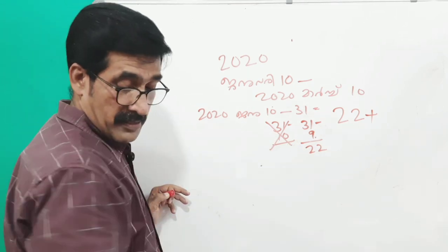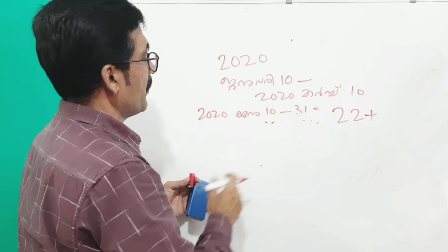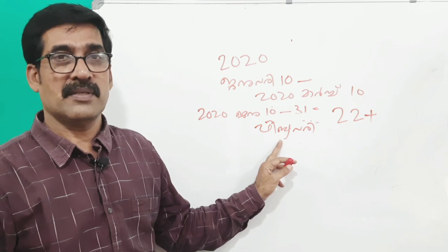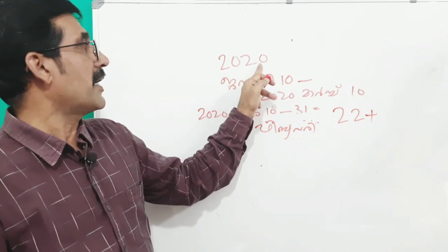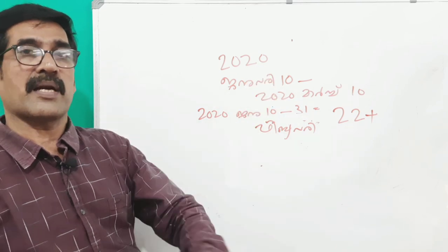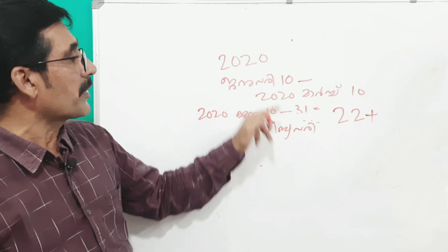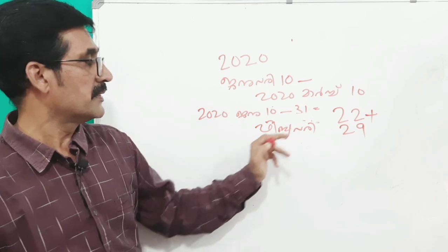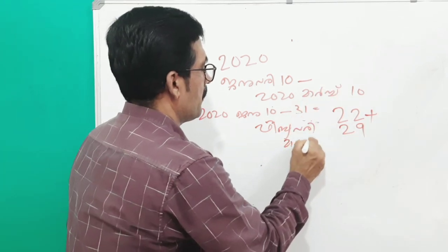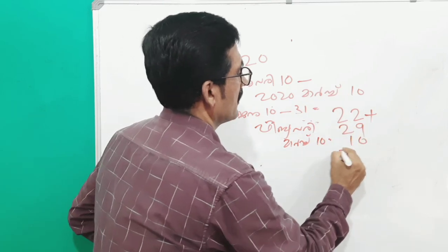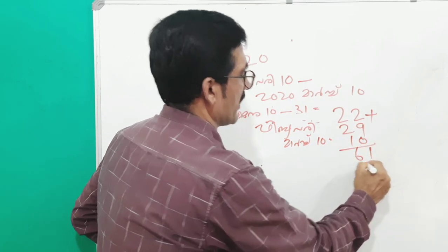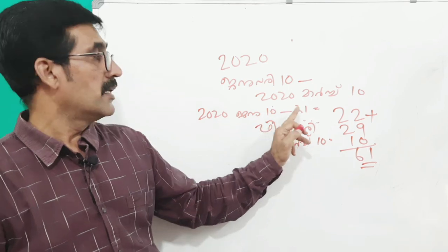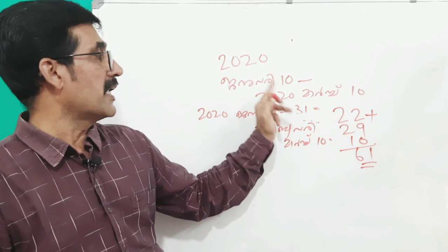Looking at what happened 20 years ago — February. February has 28 days, or February 29th in a leap year. From March 10th, that is 10 days. When you count it, it comes to 61 days total. Now 61 days from January 1st gives us the new year reference for the next class.